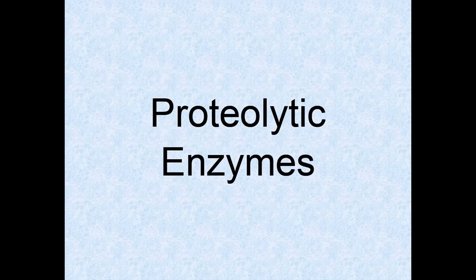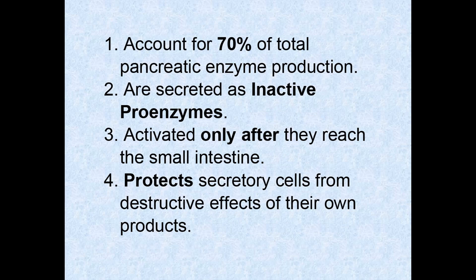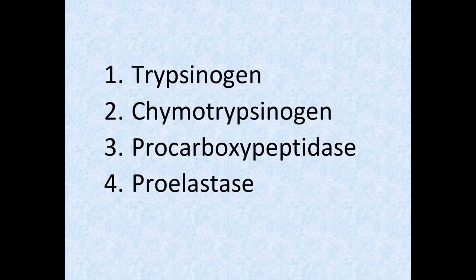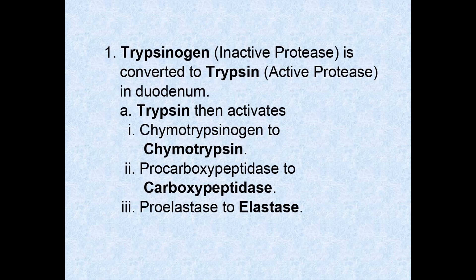Proteolytic enzymes make up a majority of pancreatic enzymes; however, they are released as pro-enzymes. Pro-enzymes are inactive, mainly to protect the duodenum from their damaging effects. Trypsinogen is the first pro-enzyme to be converted to trypsin, and then trypsin can activate the remaining pro-enzymes.